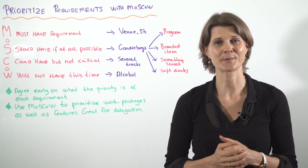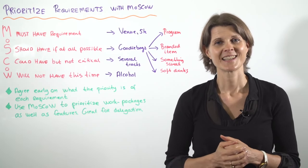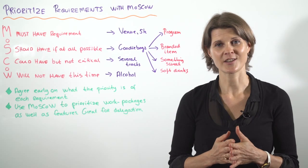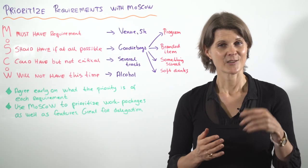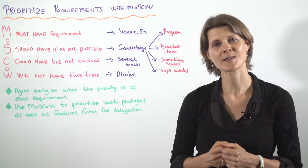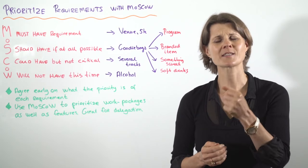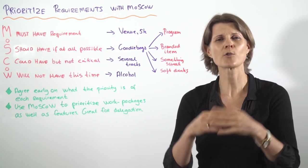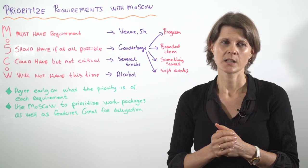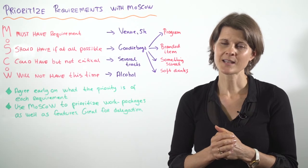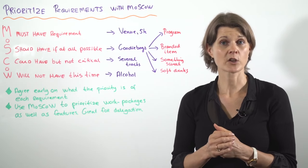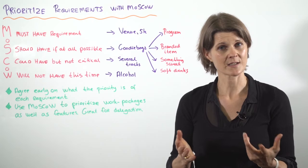Let's look at an example. Imagine that you are the project manager for a conference. You sit down with your stakeholders and you ask them what must there be for this conference — what are all your must-have requirements? And your client says we must have a venue within five kilometers of the city centre.